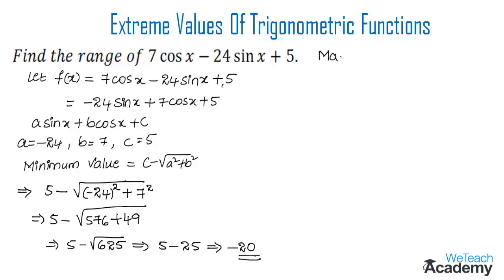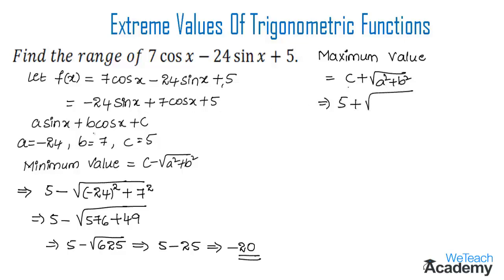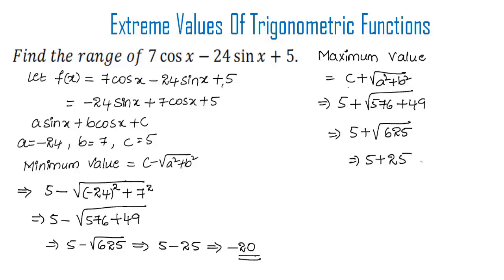Now the maximum value is given by c + √(a² + b²). Substituting: 5 + √((-24)² + 7²) = 5 + √(576 + 49) = 5 + √625 = 5 + 25 = 30. So 30 is the maximum value.